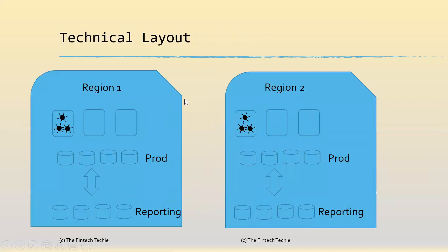So what are the technical layout? You have two main components: the application layer where these are hosted as containers and managed by Kubernetes, and these are connected to the database. The database is a multi-tenant database with each tenancy hosting a specific customer's data. This is replicated using replication mechanisms into a reporting database, and customers will have access only to the reporting database for a read-only view of their data.